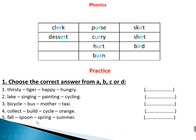Number five: fall, spoon, spring, summer. All of them are seasons except 'spoon'. You can replace it with 'autumn' or 'winter'.